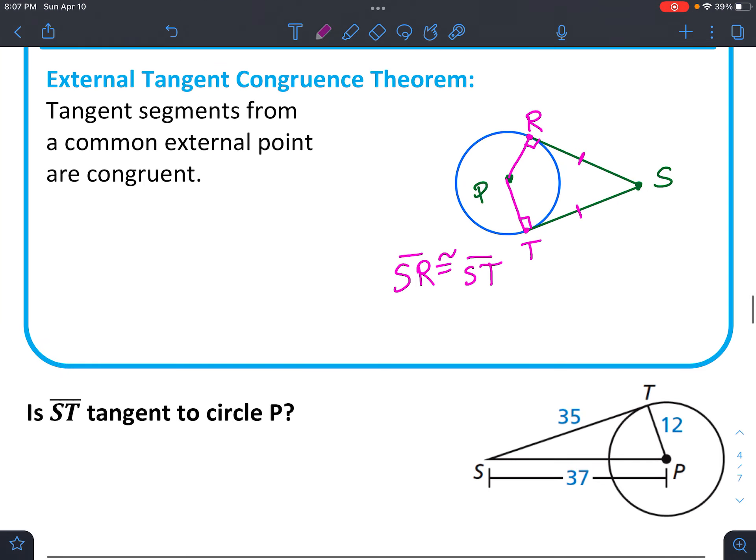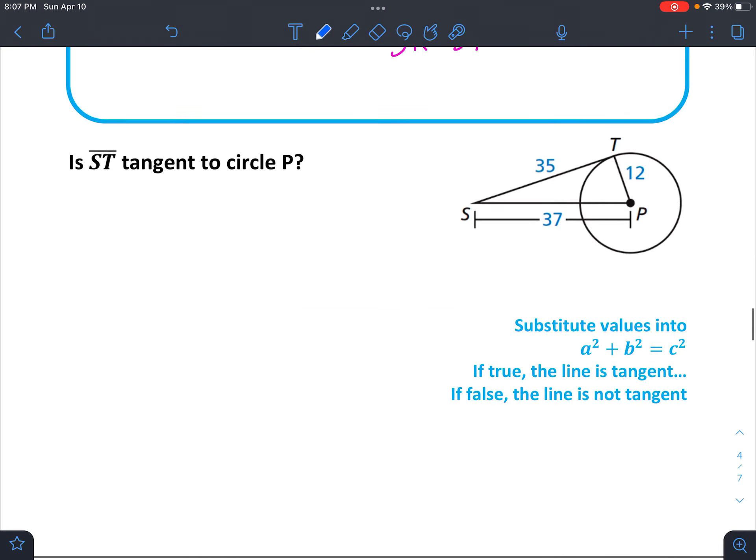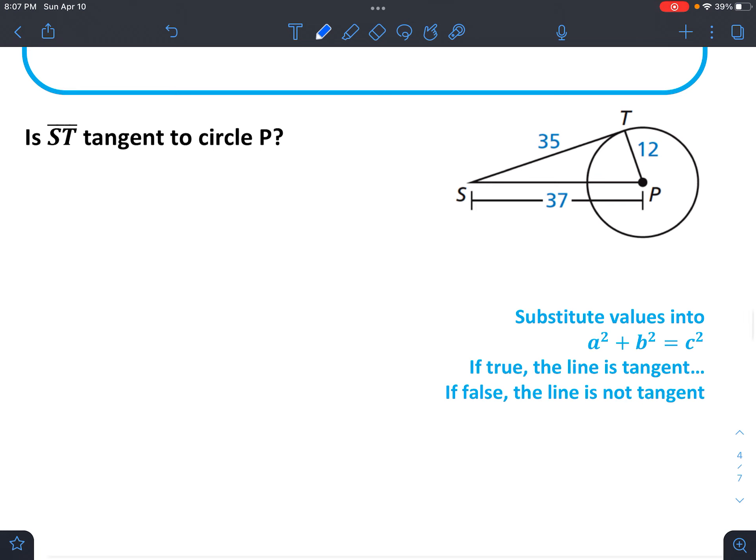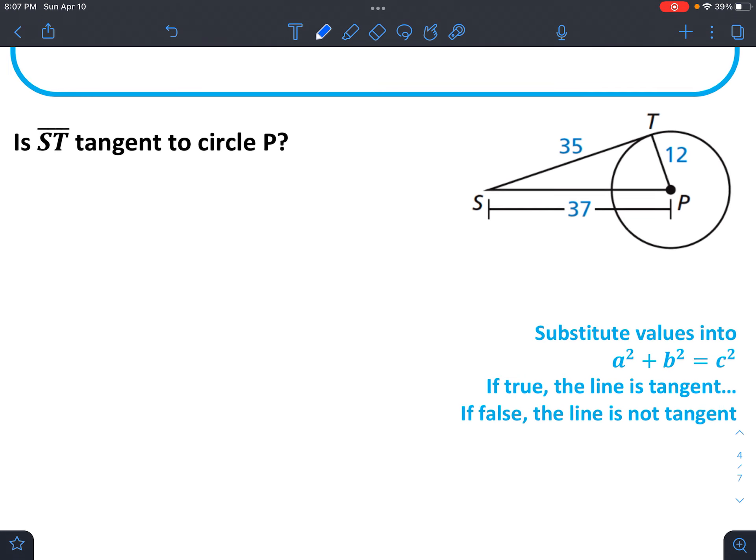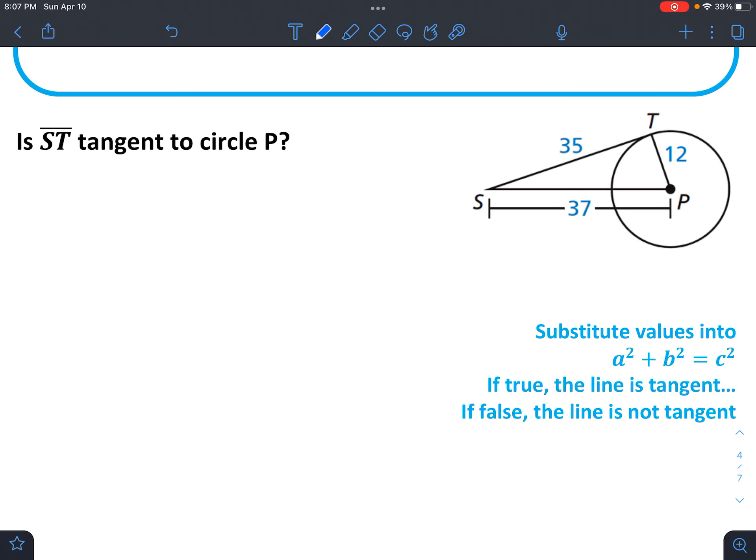And we can actually use this information to find some things. In this case, we're going to ask ourselves, is ST tangent to circle P? Sometimes things might look tangent, but they actually aren't. And so, remember with the Pythagorean theorem, we can check to see if this is a right angle. So if we draw the triangle, we're wondering if that is a right angle.